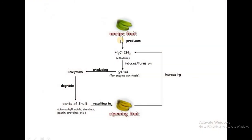An unripe fruit produces ethylene. Ethylene induces different types of genes and produces enzymes that degrade different parts of the fruit, such as chlorophyll, acids, starches, pectins, and proteins, resulting in the ripening of the fruit.